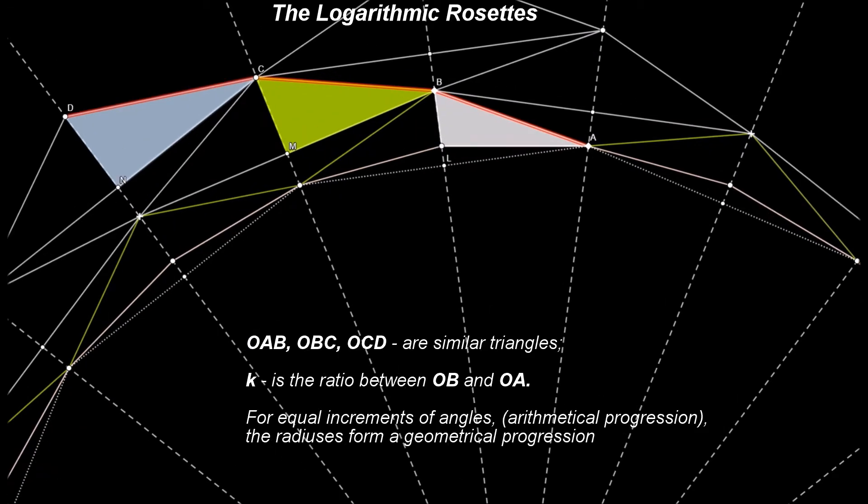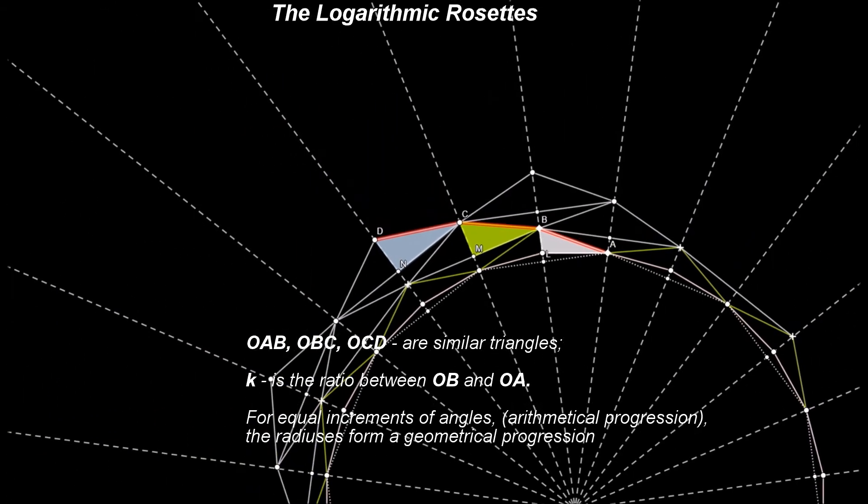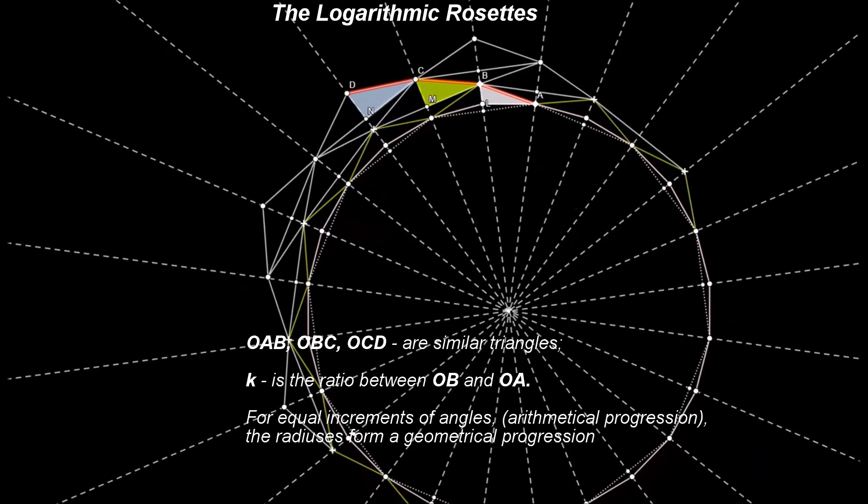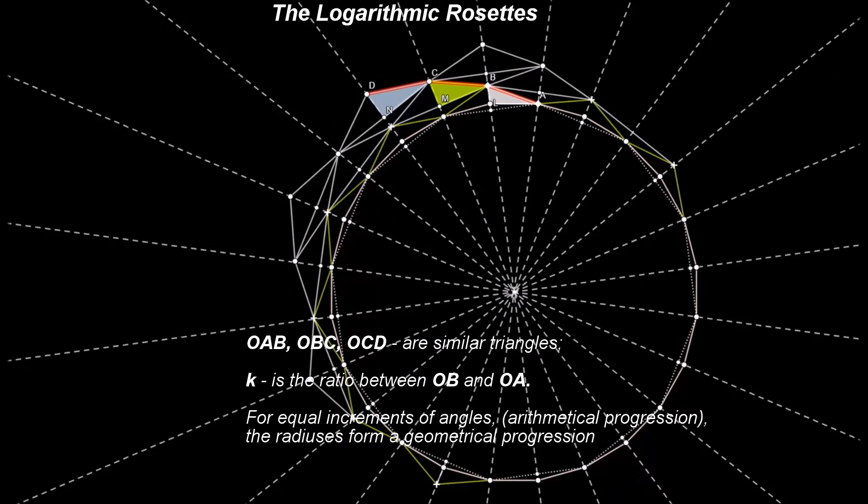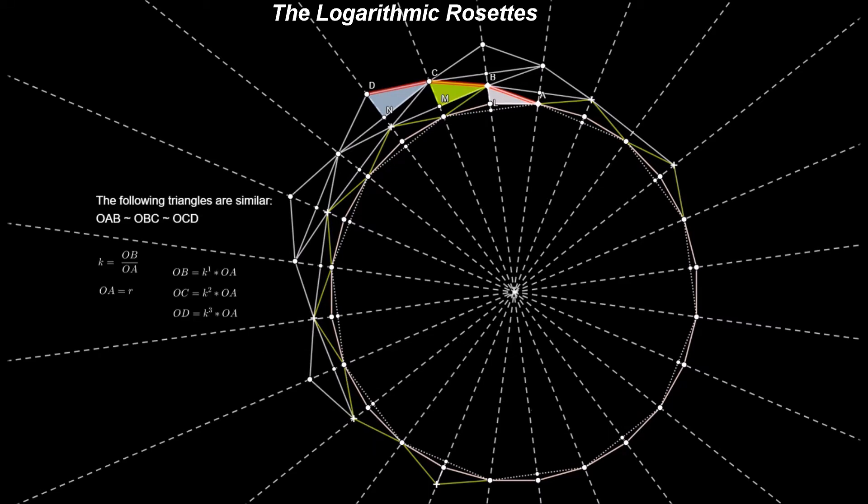For equal increments of angles, arithmetical progression, the radiuses form a geometrical progression: OA, K multiply by OA, K square multiply by OA, K cube multiply by OA, and so on.